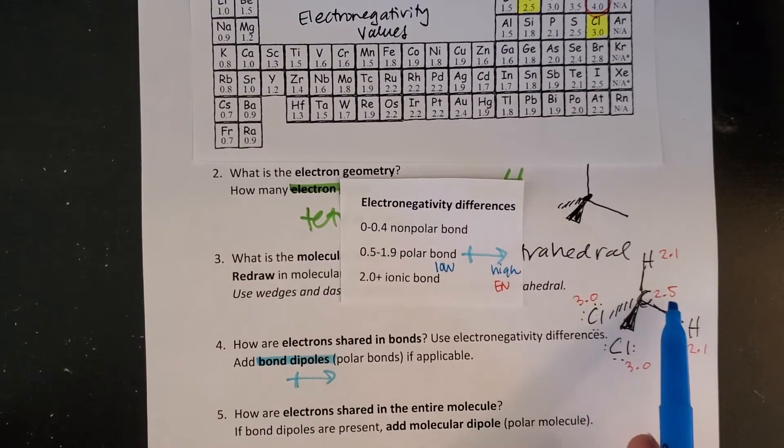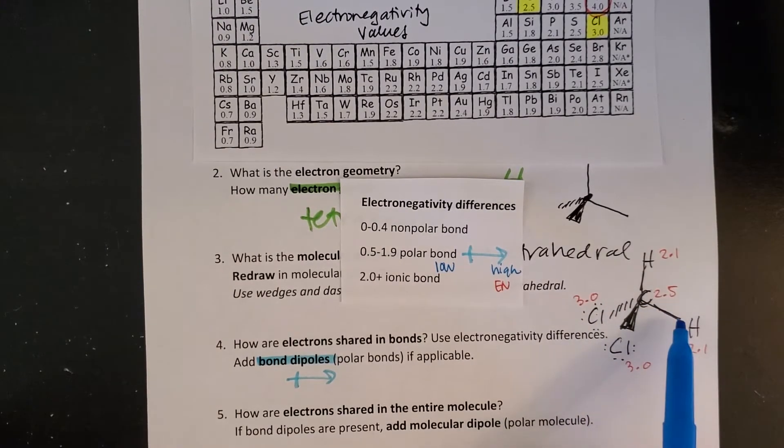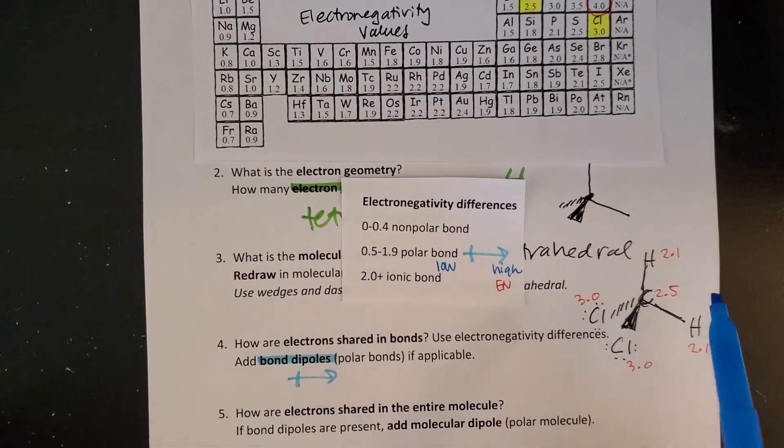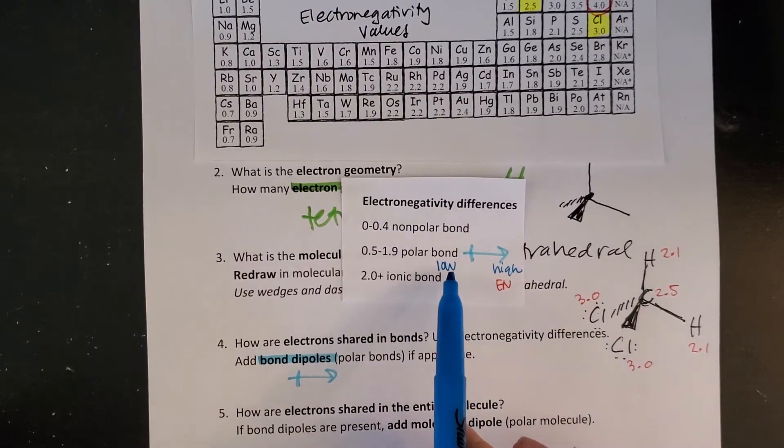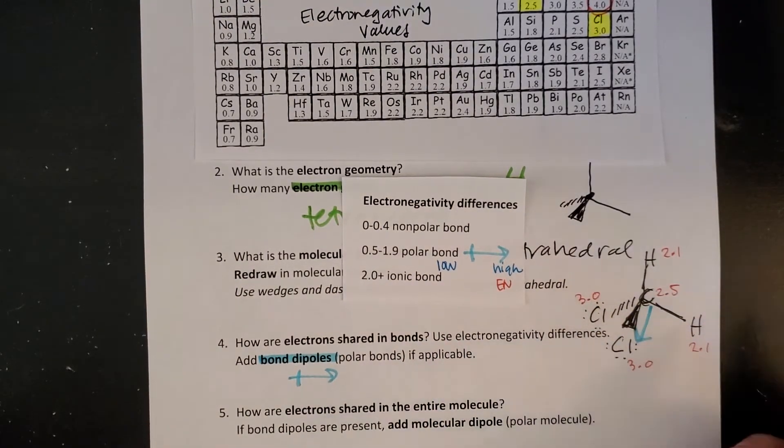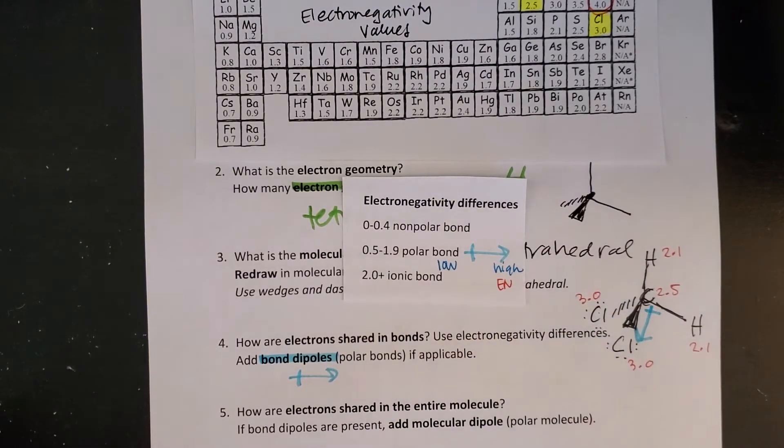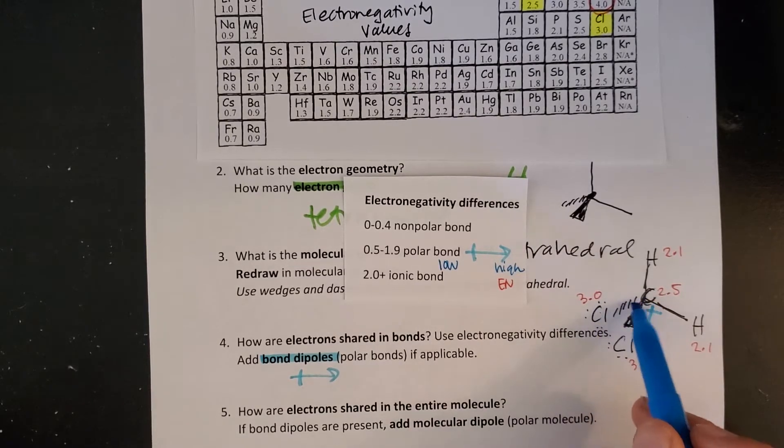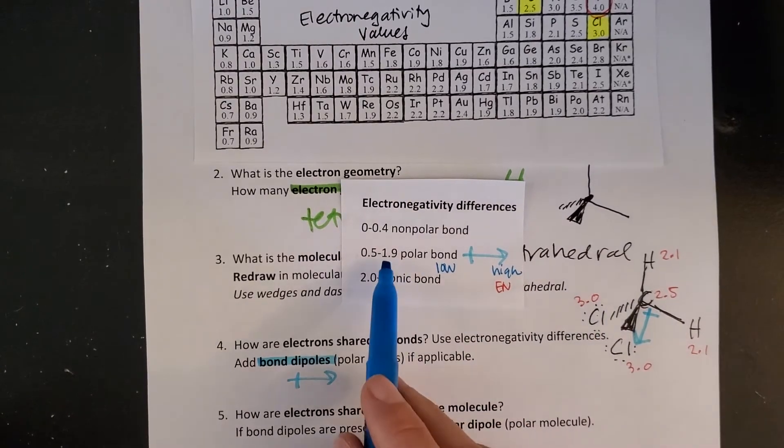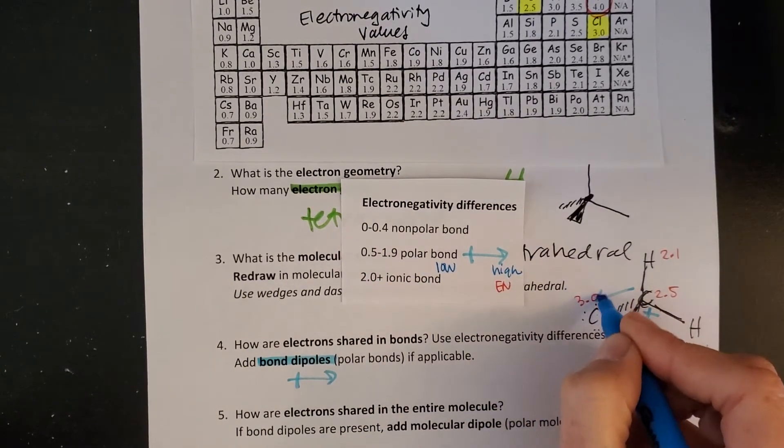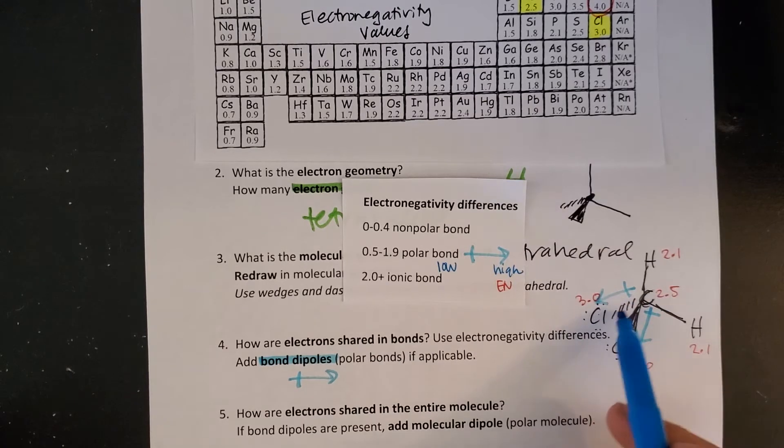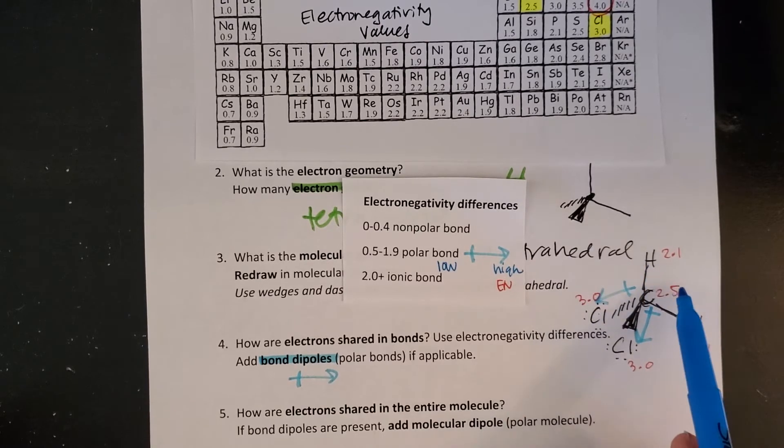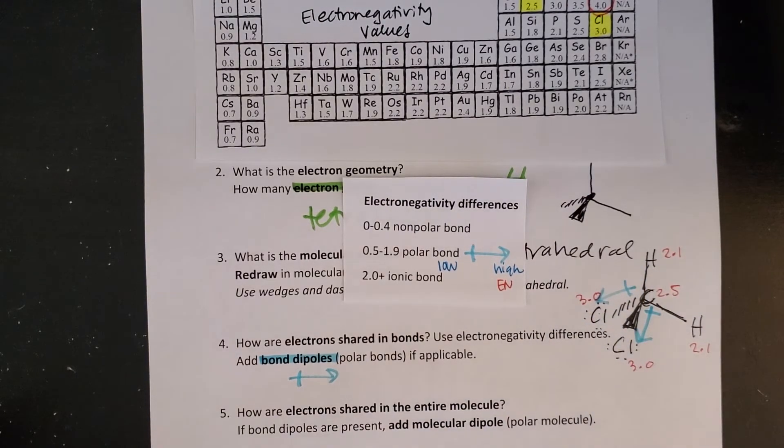Now C to Cl: 3.0 to 2.5 gives a 0.5 difference. That means I need to draw a bond dipole with electrons being pulled towards chlorine, leaving carbon slightly positive. Notice how that parallels the bond exactly. The next C to Cl bond: 2.5 and 3 also gives 0.5 difference. Electrons are pulled towards chlorine and my bond dipole parallels that bond exactly. So I have even sharing on C-H bonds and uneven sharing on C-Cl bonds.